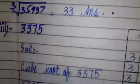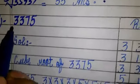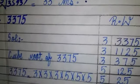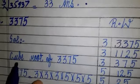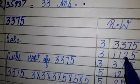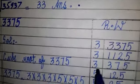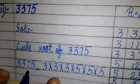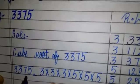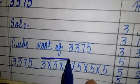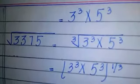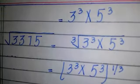Now part number 2: find the cube root of 33375. First we find its prime factors. We divide by 3, then 3, then again 3, then 5, 5, and 5. So the prime factors are 3 into 3 into 3 and 5 into 5 into 5.